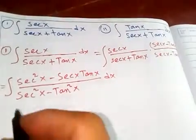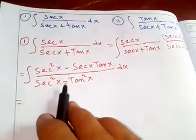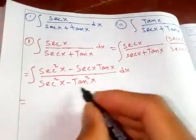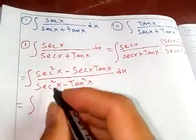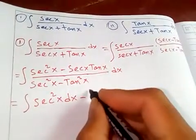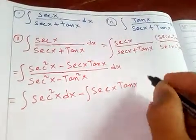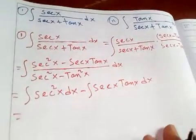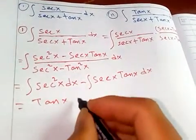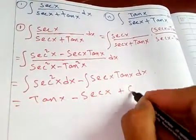As shown in my other video, secant squared x minus tangent squared x equals one, so the denominator is just one. We split this into: integral of secant squared x dx minus integral of secant x tangent x dx. The integral of secant squared x is tangent of x, and the integral of secant x tangent x is secant of x. So the answer is tangent x minus secant x plus C.